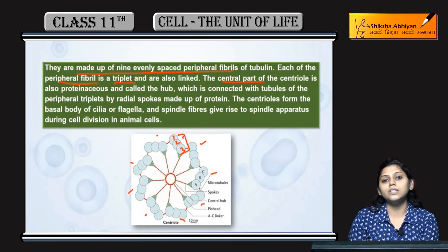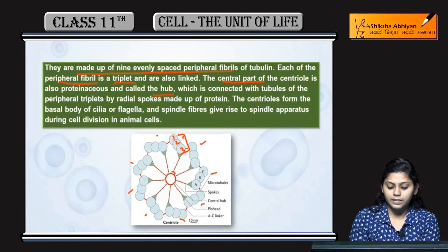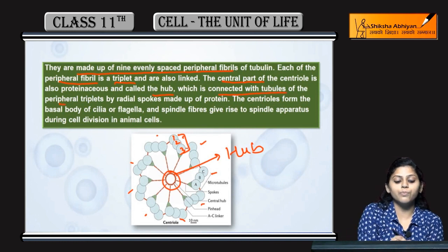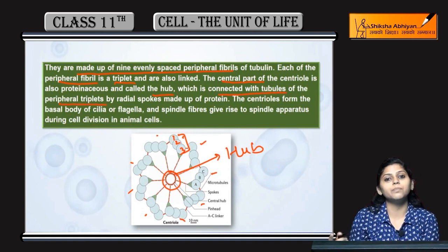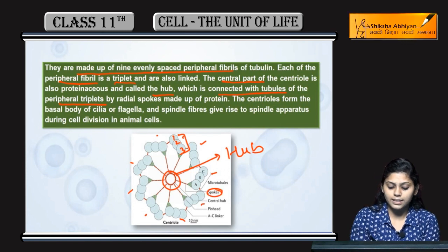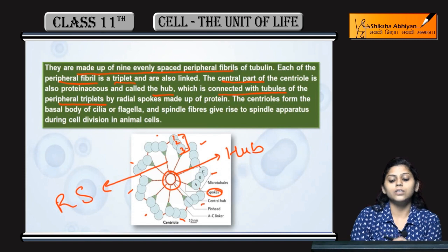The central part of the centriole is proteinaceous in nature. This central hub is connected with the tubules of the peripheral triplets by radial spokes.